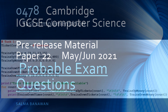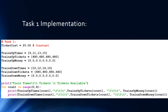Now, as you remember, the task 1 implementation has the initialization of six one-dimensional arrays, and it has a for loop to display the data in those arrays. So naturally, the questions about task 1 are going to be related to storing data, the variables or the data structures that you're storing the data in.